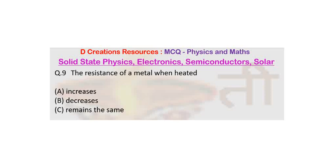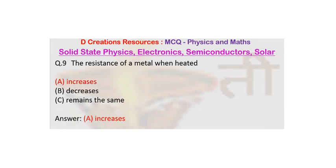So obviously when it is heated, the kinetic energy of electrons is going to increase and they will undergo collisions, and this entire thing will lead to increase in resistance. So the correct answer is option A: increases. The resistance of a metal when heated increases.